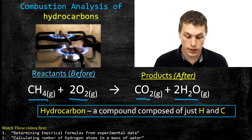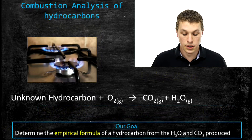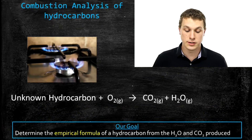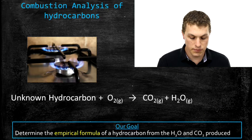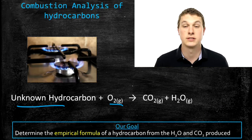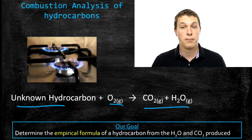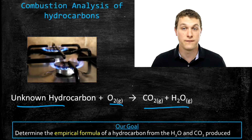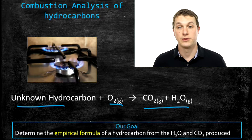Typically, you don't know the formula of the hydrocarbon that you're putting in. So instead of having methane drawn out, you just have some unknown hydrocarbon, and you burn it in the presence of oxygen, and it spits out CO2 and water. Our goal is to use the amount of CO2 and water produced to figure out the empirical formula of that unknown hydrocarbon.